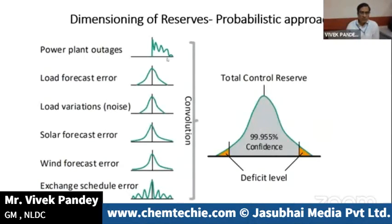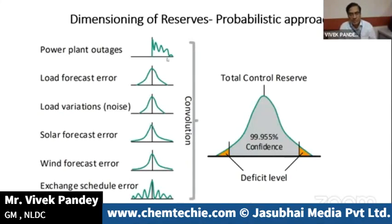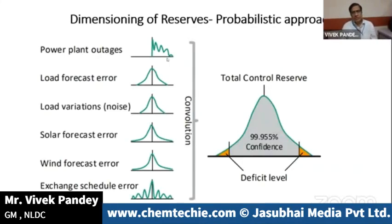These daily optimizations have yielded huge savings, but the constraint we face is that costlier stations often hit their technical minimum levels. There is a need to lower technical minimums further — from 55 percent down to perhaps 40 percent, as mandated in the CEA technical standards. Additionally, with variable and intermittent non-dispatchable generation entering the grid, there are increasing uncertainties, and ensuring secure and reliable operation requires adequate reserves.